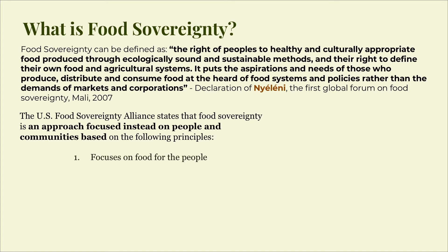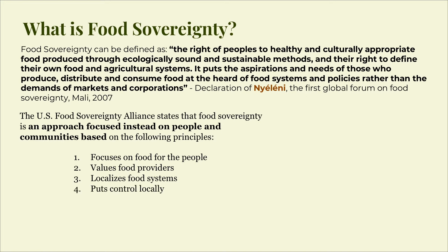Focus on food for people — policy should focus on the right to sufficient, healthy, and culturally appropriate food for all. Values food providers, in that it values all those who grow, harvest, and process food. Localizes food systems — food sovereignty brings food providers and consumers together to make joint decisions on food issues. Puts control locally, in that food providers should have control over their land, seeds, and water.